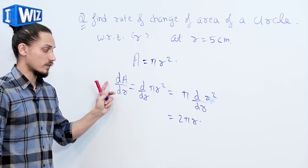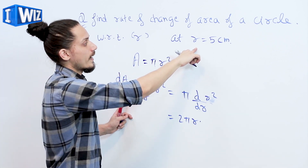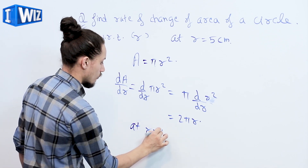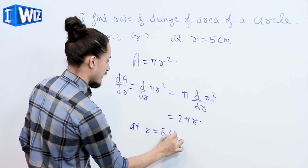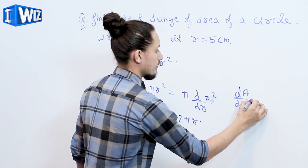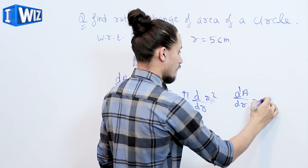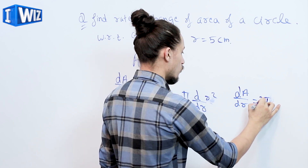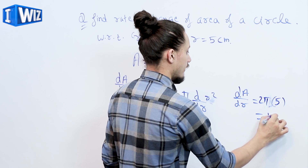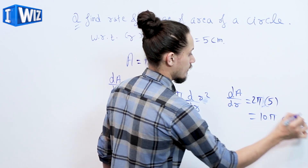This equals 2 pi r. This is the rate of change of the circle's area with respect to r. But we have to find its value at r equals 5 centimeters. So at r equals 5 centimeters, we get dA/dr equals 2 pi times 5, which equals 10 pi centimeters squared per second.